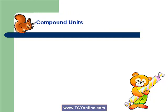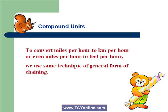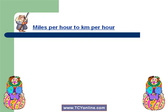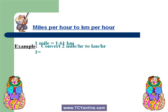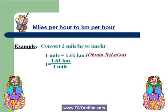Now let's see what we do when we have compound units. For example, we need to convert miles per hour to kilometers per hour, or miles per hour to feet per hour. We will use the same technique of general chaining for this. In this example, we need to convert 2 miles per hour to kilometers per hour. We are aware that 1 mile equals 1.61 kilometers. So obtain a fraction equal to 1 by writing the equation with the desired unit on top and the given unit on bottom. So we get 1 equals 1.61 kilometers over 1 mile.